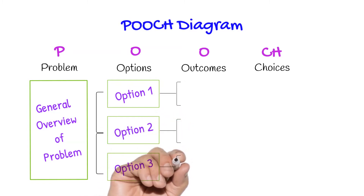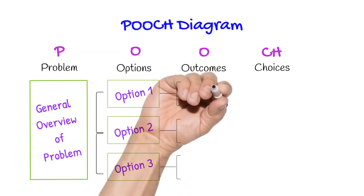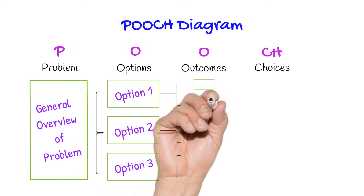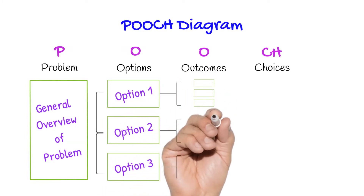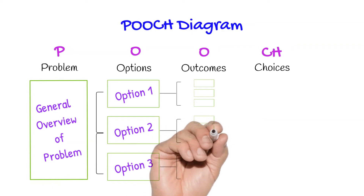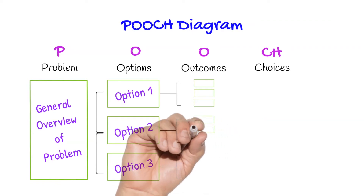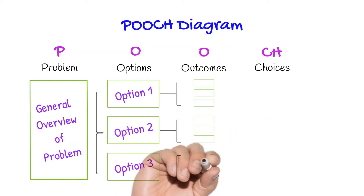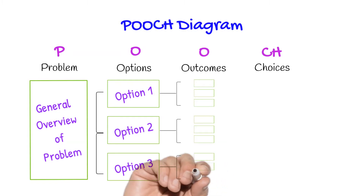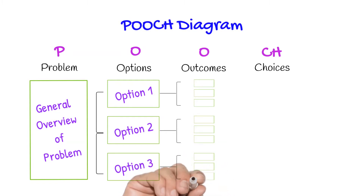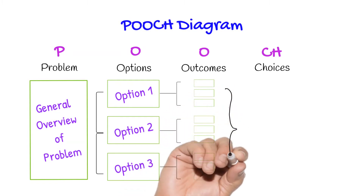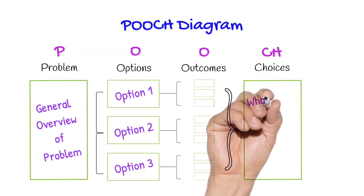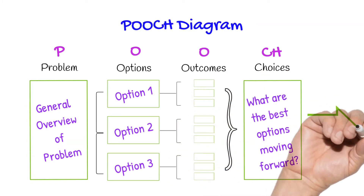You could argue that the problem and options phase of this diagram is actually more divergent thinking, and you would be correct. However, exploring outcomes and identifying the most suitable choices is where convergent thinking comes into play. Convergent thinking is about narrowing down our options and looking at the most suitable outcome for your specific scenario to decide what the best options are moving forward.